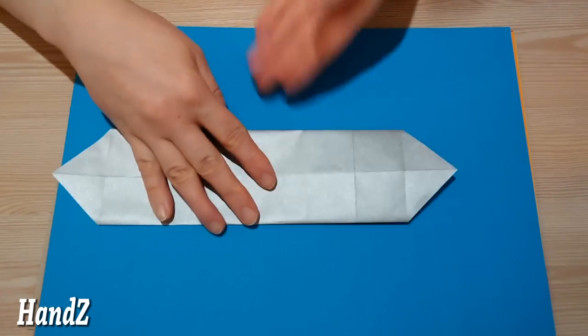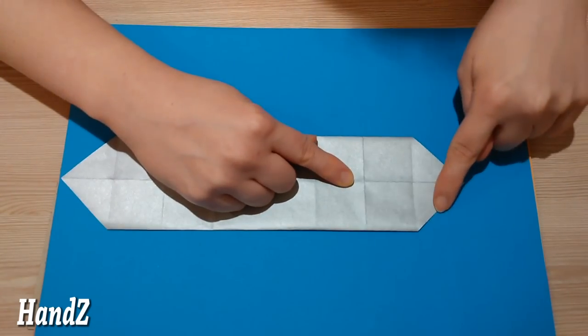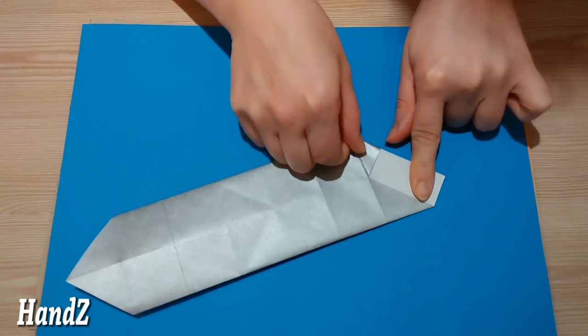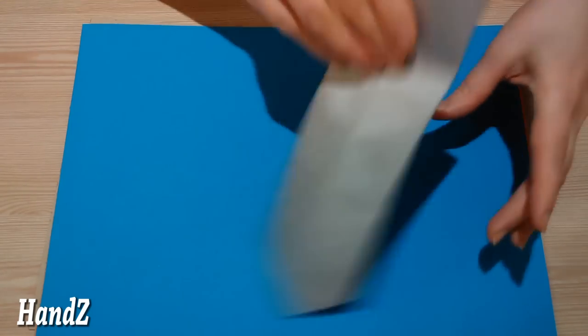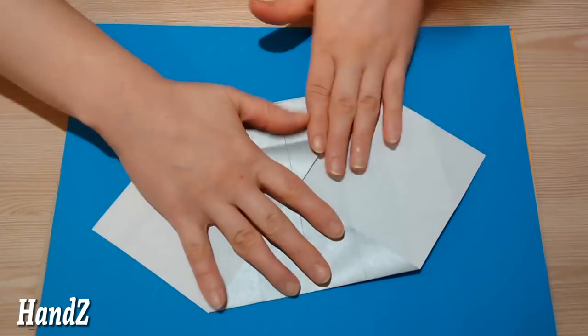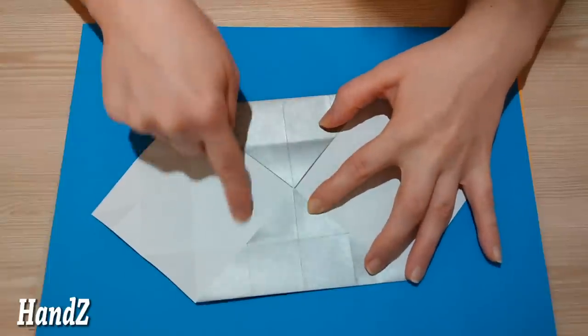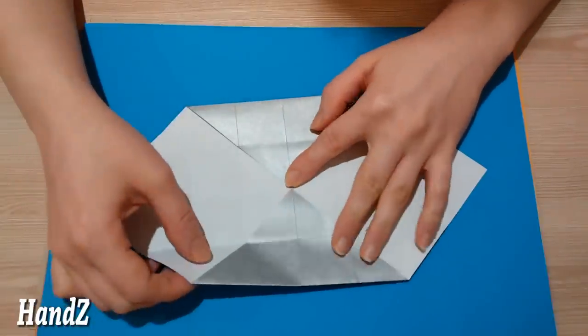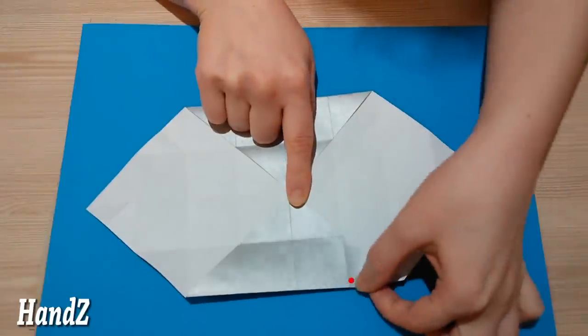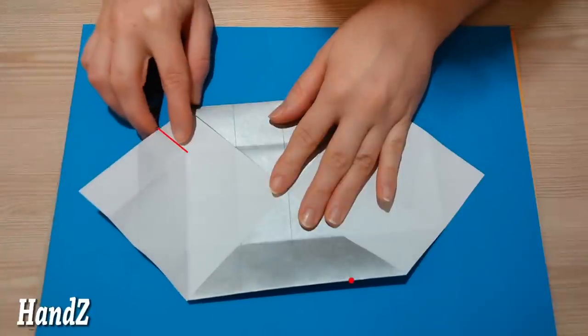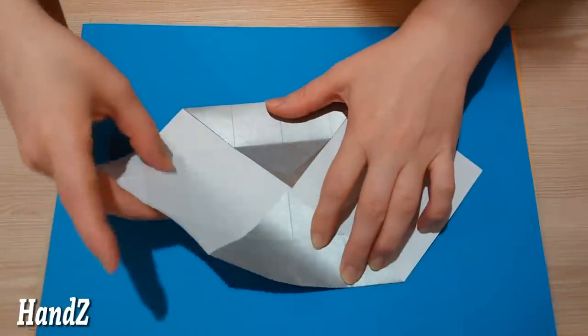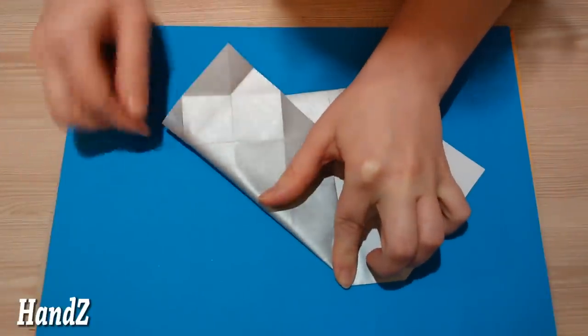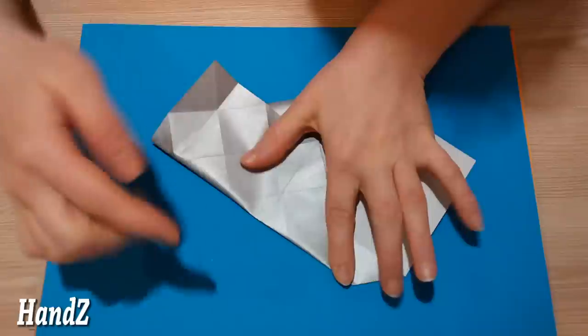Now, turn our model over and make a diagonal crease, as shown. And open it. We have a square inside and we need to make a short diagonal crease over here. So, we need to fold our paper along the line from the red top point to the bottom red crease. Make a crease only in the center.